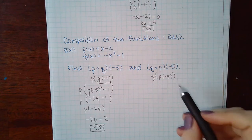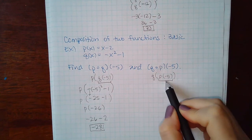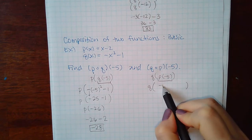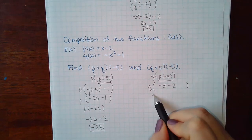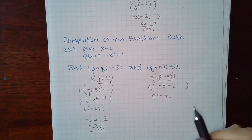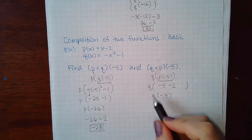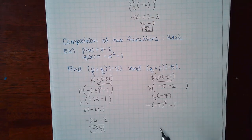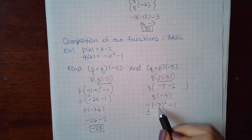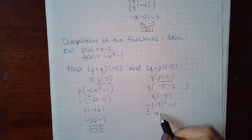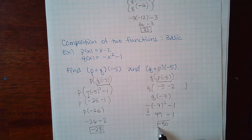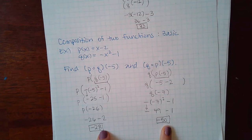Now swap it: compute q(p(−5)). Plug −5 into p first: −5 − 2 = −7. Then plug −7 into q: −(−7)² − 1 = −49 − 1 = −50. Notice the two compositions give different answers: −28 versus −50. Composition is generally not commutative.